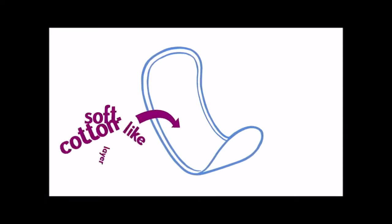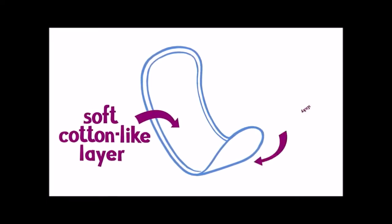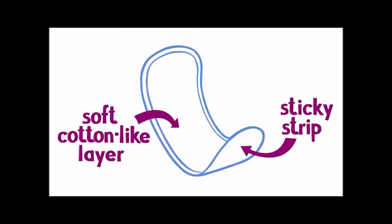How do these pad things work? Pads are worn in your underwear during your period to absorb your menstrual flow. The pad has a soft cotton-like layer on the top and a sticky strip on the bottom to keep it firmly in place in your underwear.